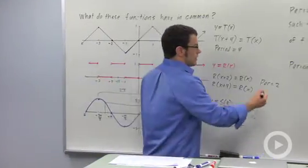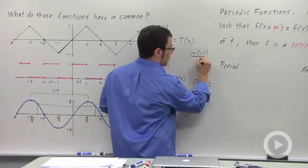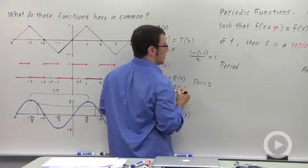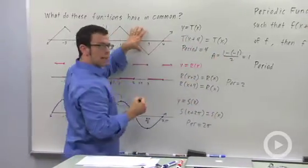So the amplitude would be 1 minus negative 1 over 2, which is 1. I'll write A for amplitude. The amplitude of this function is 1.